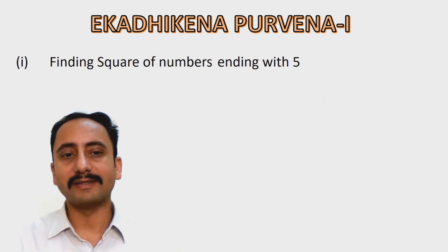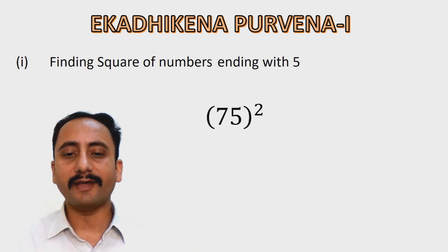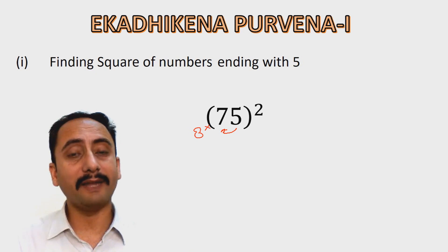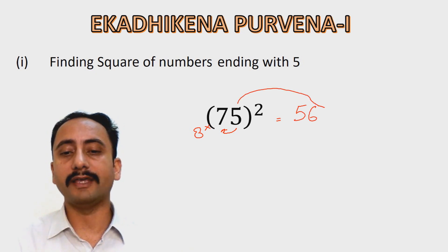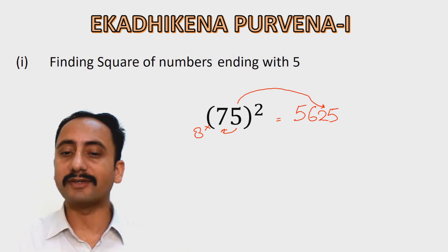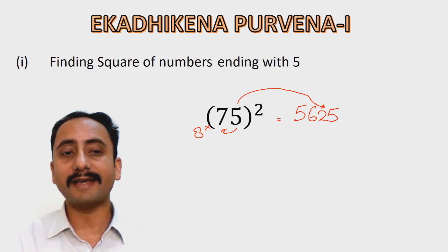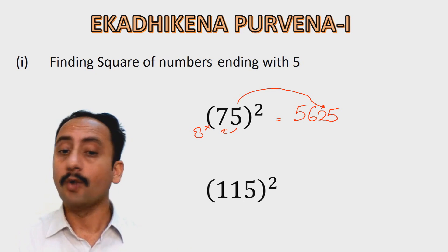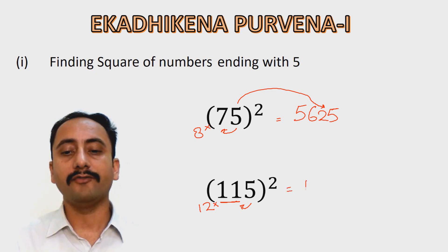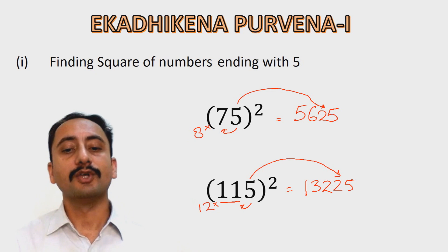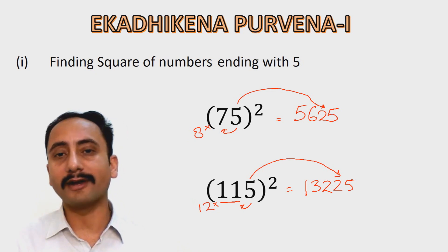Let's do a few more examples quickly. For 75 squared: the number previous to 5 is 7, one more than 7 is 8, and 7 multiplied by 8 is 56. Then append 25, giving 5,625. For 115 squared: the previous number is 11, one more than 11 is 12, and 12 multiplied by 11 is 132. Append 25, giving 13,225.